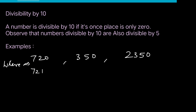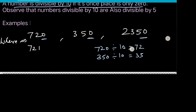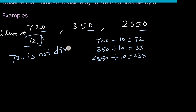Divisibility by 10: a number is divisible by 10 if its ones place is 0. For example, 720 divided by 10 is 72; 350 divided by 10 is 35; 2350 divided by 10 is 235. But if the last digit is not 0, the number is not divisible by 10.